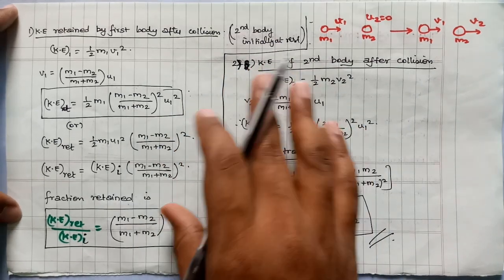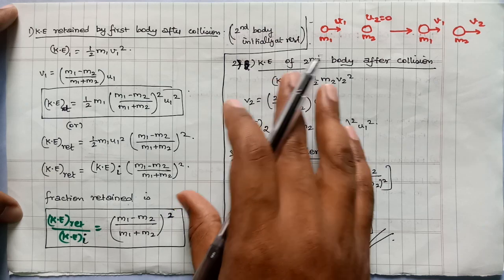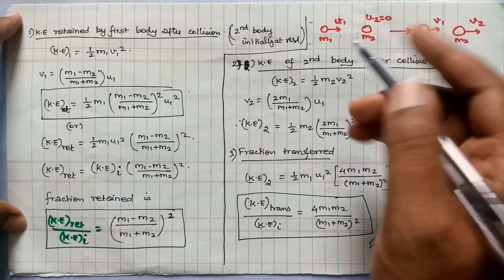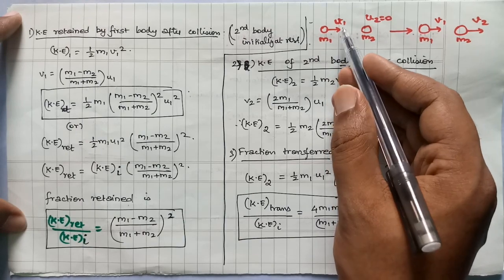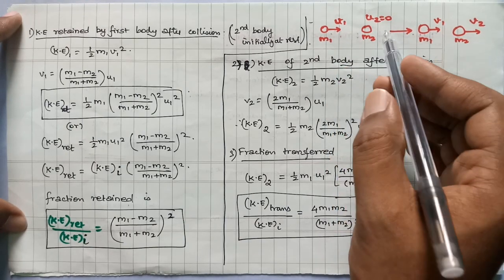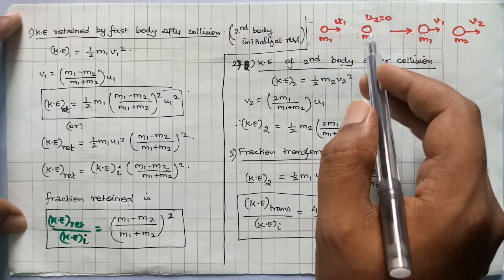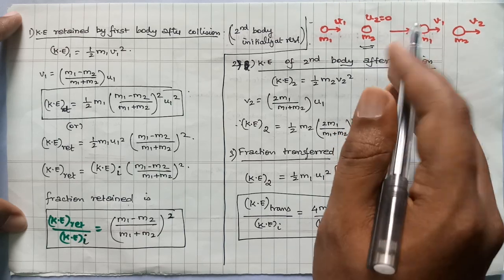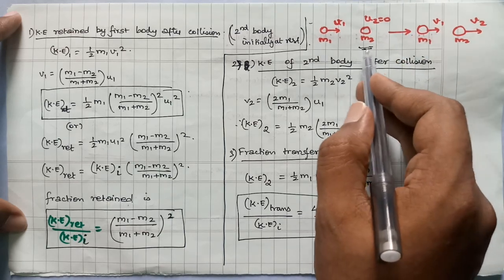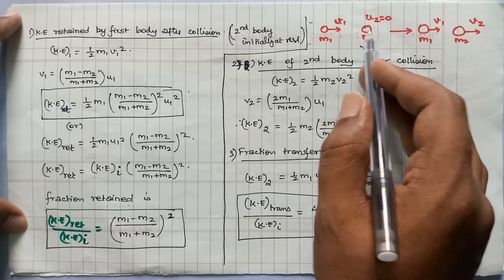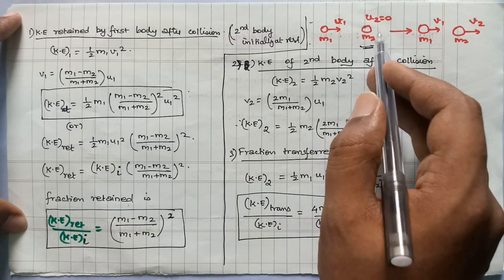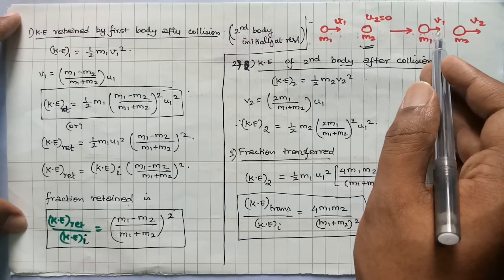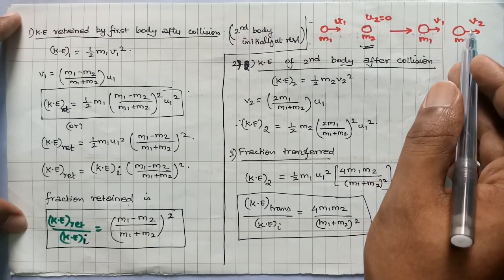Now let's start with the first one. If you look at the first problem, an object is M1 with initial velocity U1. M2 — mostly if you look at the problem, the second body is always at rest. After collision, we have M1 with V1 and M2 with V2. Now let's go to the velocity.